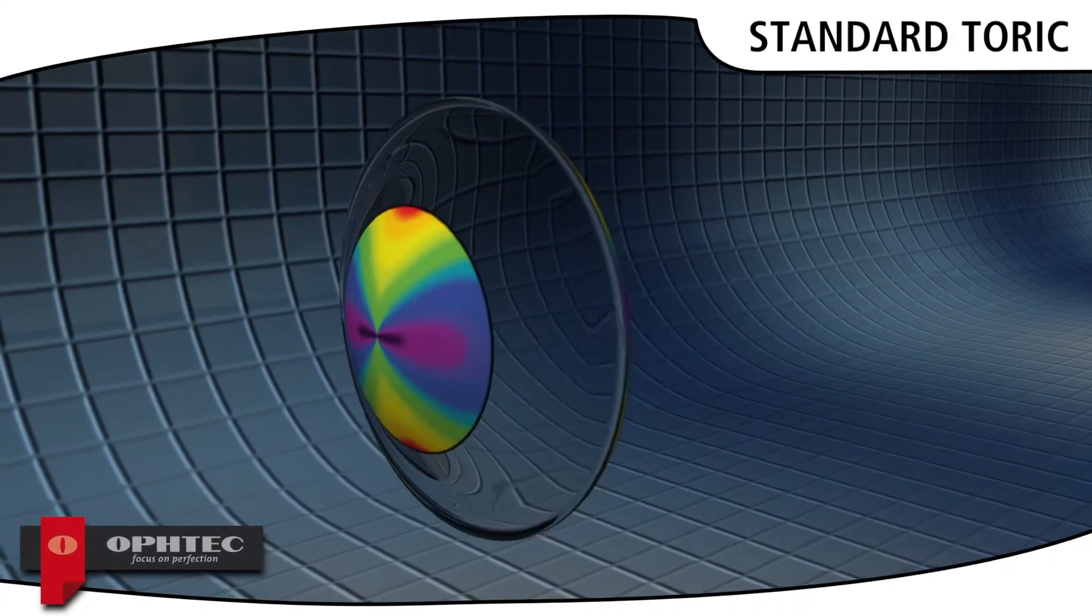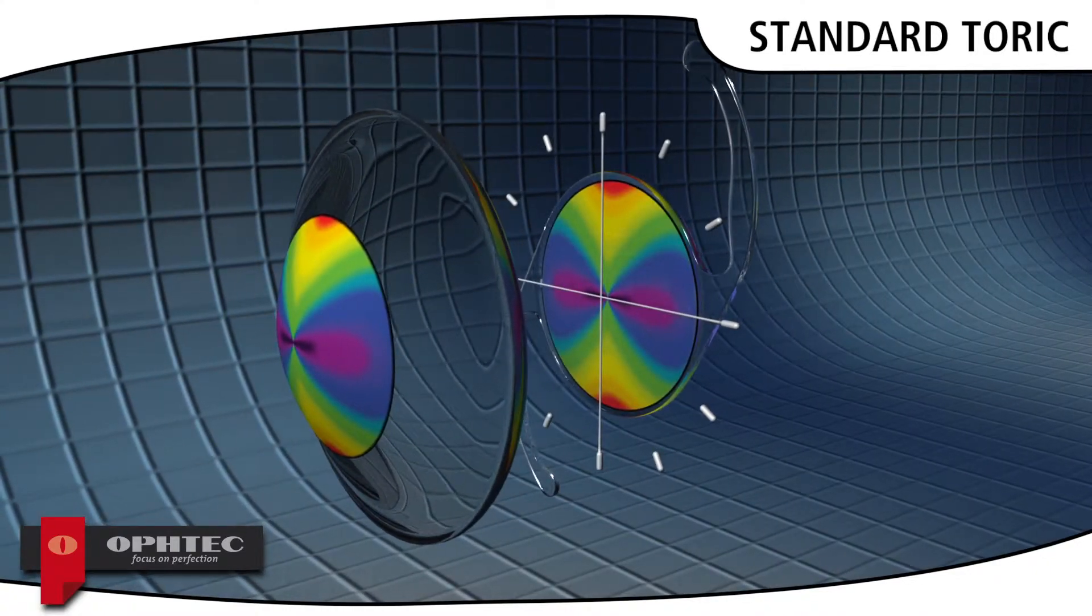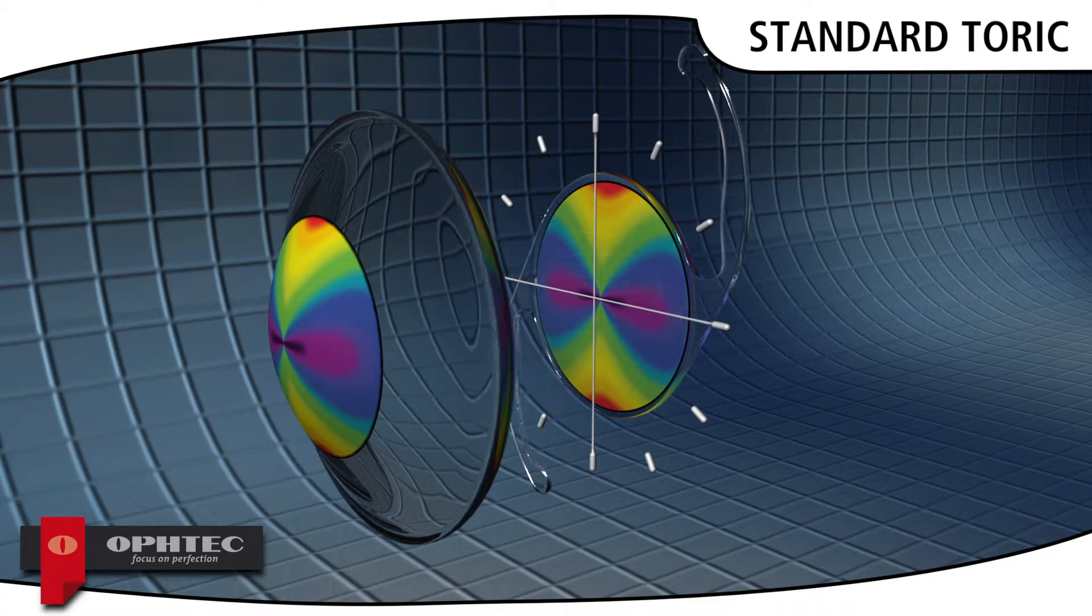Toric intraocular lenses work very well if they are perfectly aligned on the intended axis. However, in a significant percentage of cases, they tend to rotate a few degrees before they stabilize.